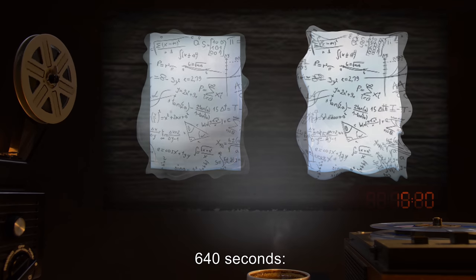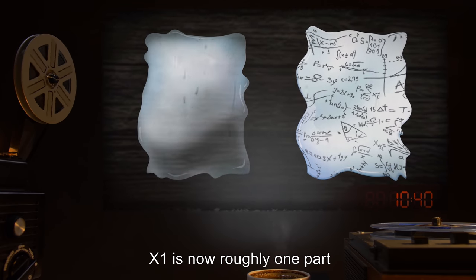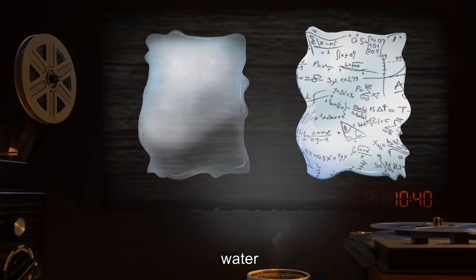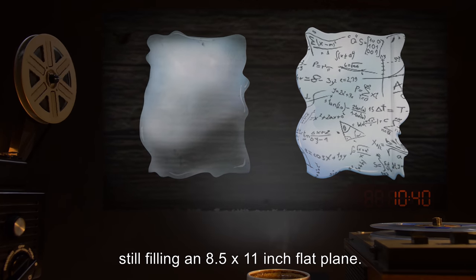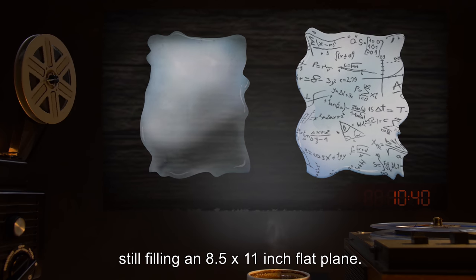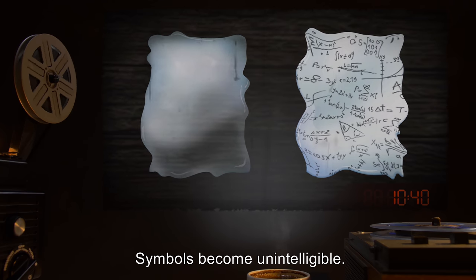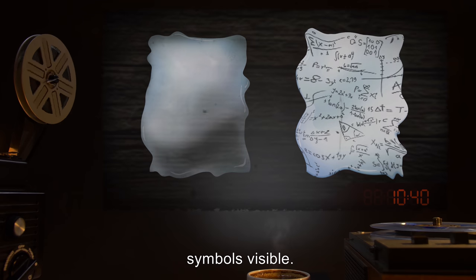Six hundred and forty seconds: X-1 is now roughly one part water and five parts pulp-like substance, still filling an 8.5 by 11 inch flat plane. Symbols become unintelligible. X-2 still appears wet, symbols visible.